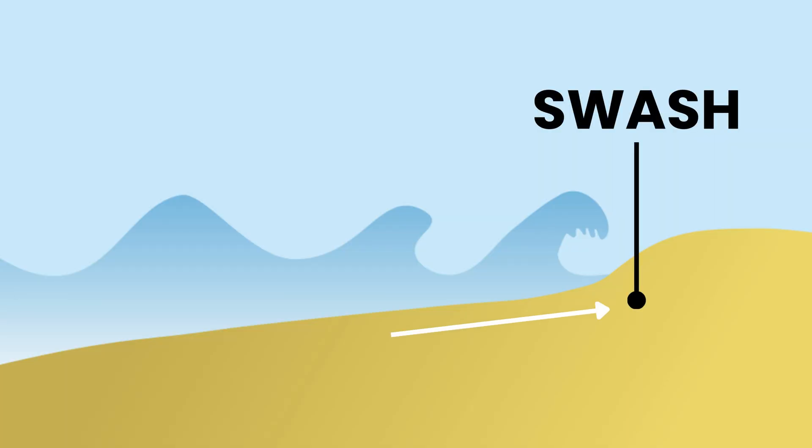Swash refers to the movement of water up the beach after a wave breaks. It is driven by the wave's energy as it crashes onto the shore. Swash carries materials like sand, pebbles, and other sediments up the beach, contributing to sediment deposition.